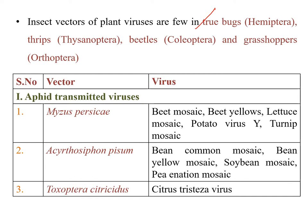Aphid-transmitted viruses: Myzus persicae can transmit beet mosaic, beet yellows, lettuce mosaic, potato virus Y, and turnip mosaic. Acyrthosiphon pisum transmits bean common mosaic, bean yellow mosaic, soybean mosaic, and pea enation mosaic. Toxoptera citricidus transmits citrus tristeza virus.